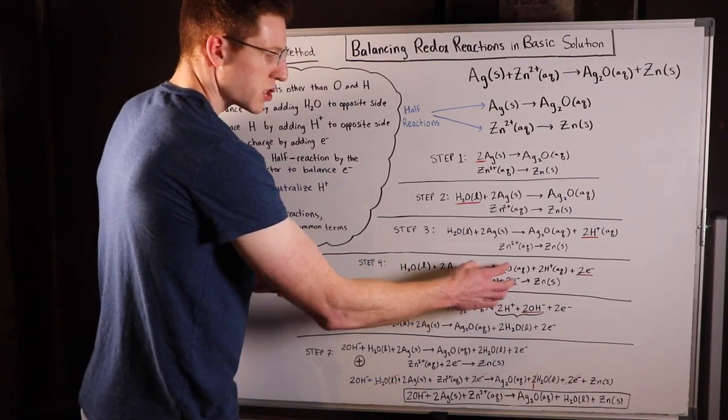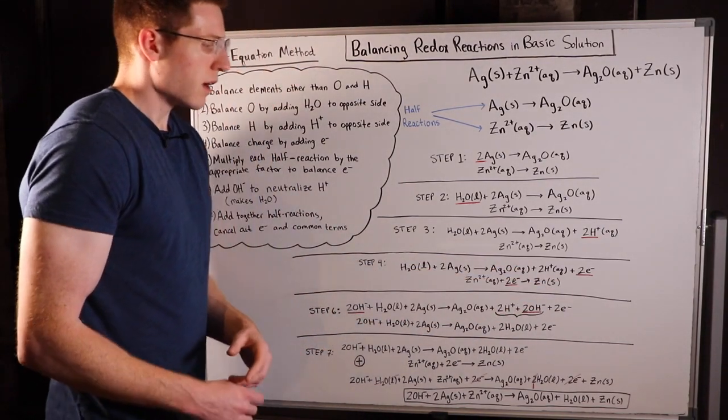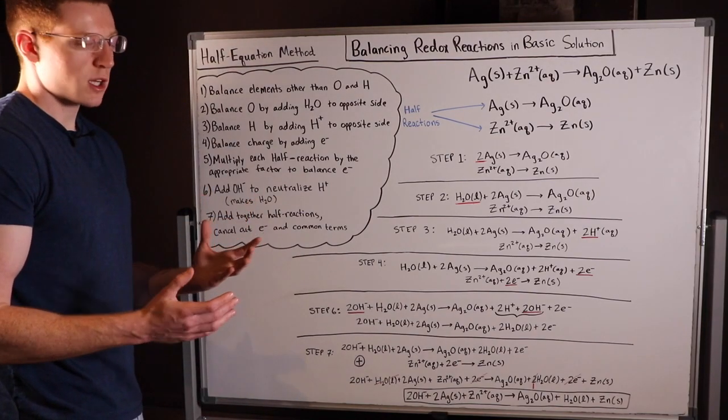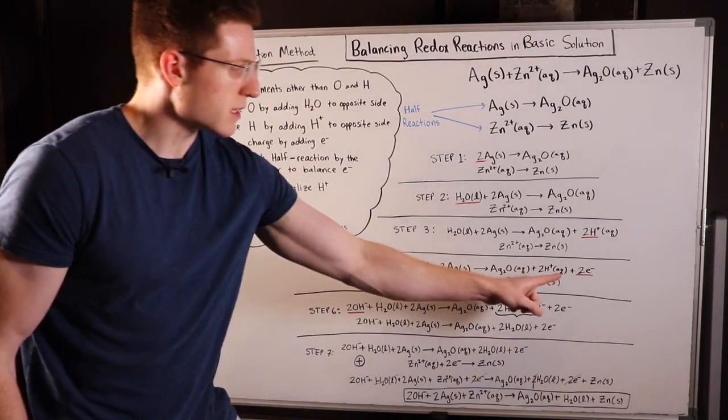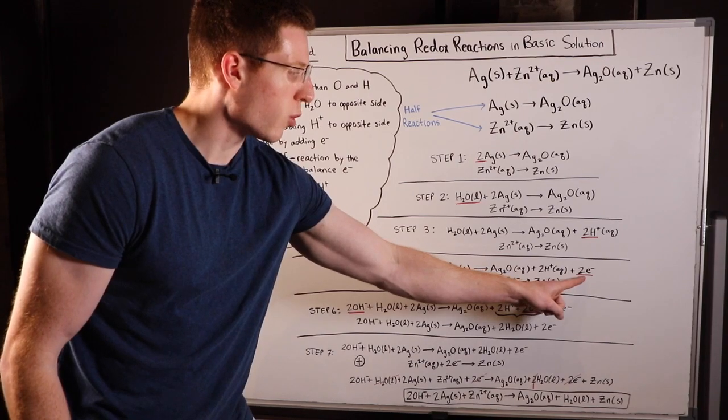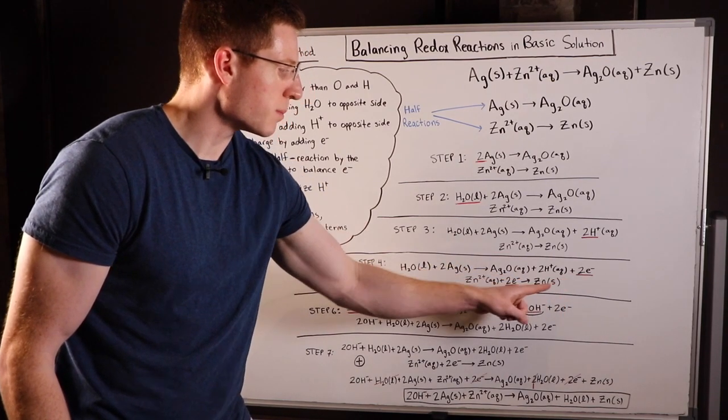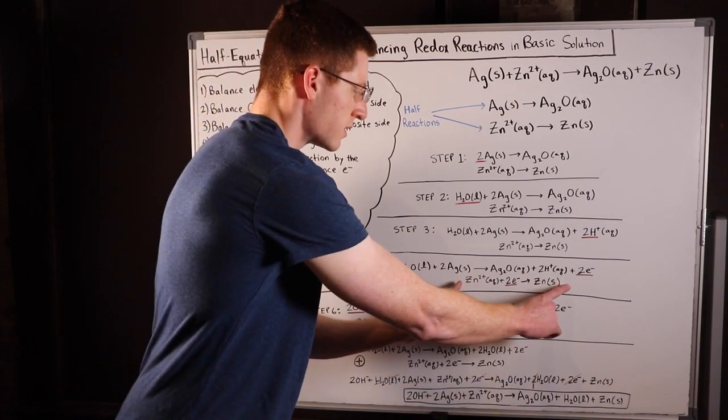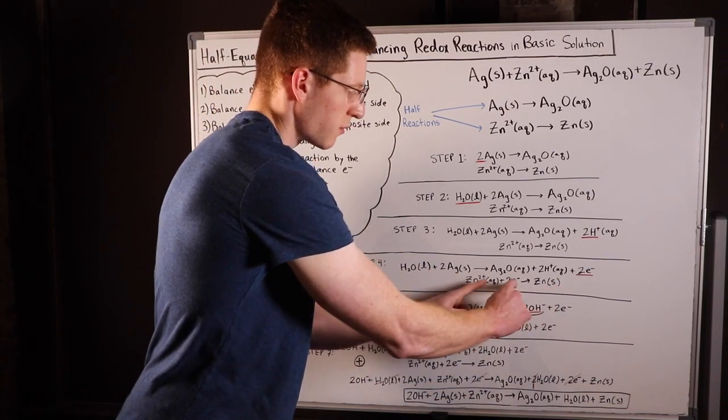Let me give you an example where you may need to do this. Let's imagine that instead of being two this was four. Then you would have to balance out this two with a four by multiplying this equation all by two to make it four and four. But in this case again it's unnecessary.